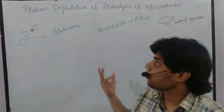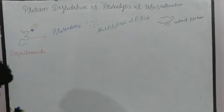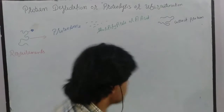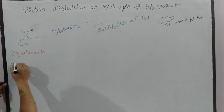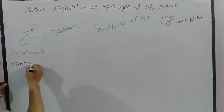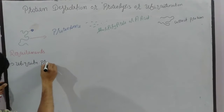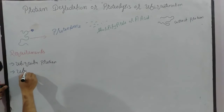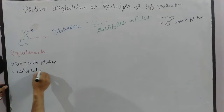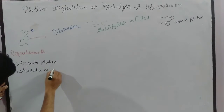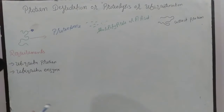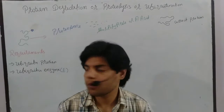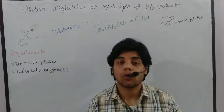For proteolysis or protein degradation, two main things are required: first, ubiquitin protein, and second, ubiquitin enzymes. There are three ubiquitin enzymes involved in protein degradation or ubiquitination.